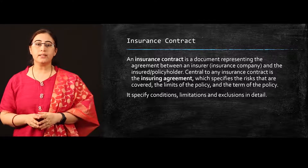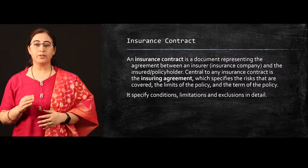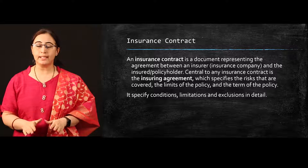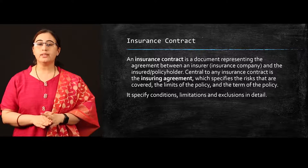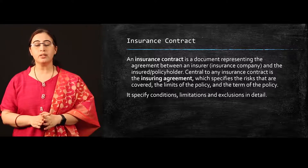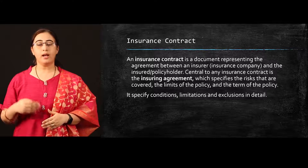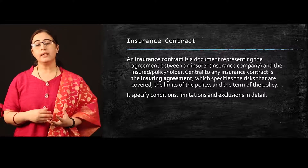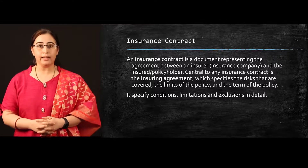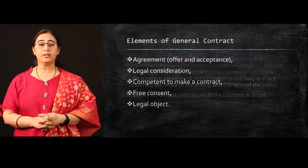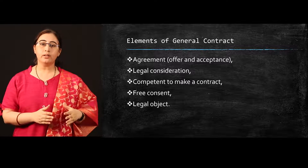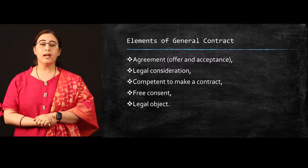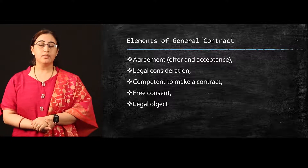Central to any insurance contract is the issuing agreement which specifies the risks that are covered, the limits of the policy and the terms of policy. An insurance contract is made up of terms and conditions related to the insured and insurer, the limitations of the contract, and the exclusive and inclusive elements in detail. We classify the insurance contract in two parts.